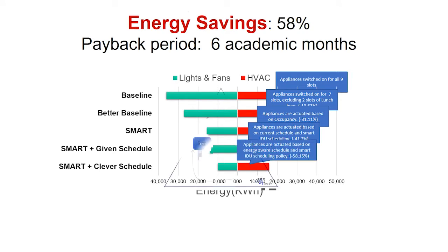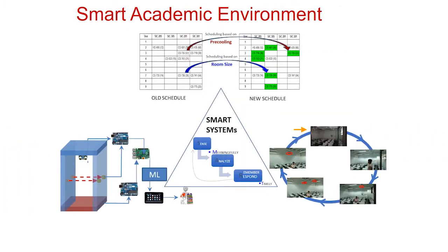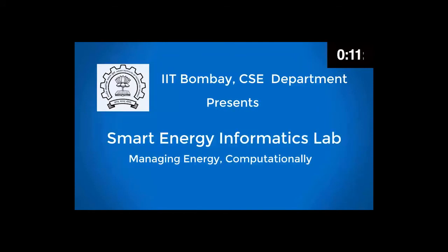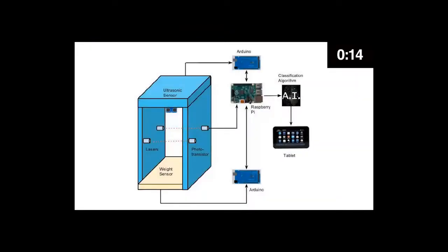So I want to show you the picture involving all of these things, including this smart door. Welcome to the Smart Energy Informatics Lab, where we manage energy computationally. Here we have the setup of the smart door system. It consists of two laser phototransistor pairs installed to detect entry or exit. An ultrasonic sensor above and a weight mat below measures the height and weight of the subject. The data gathered from height and weight sensors is fed to an AI classification algorithm for learning and predicting user identity.